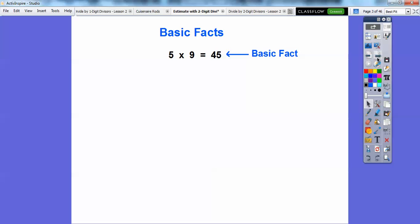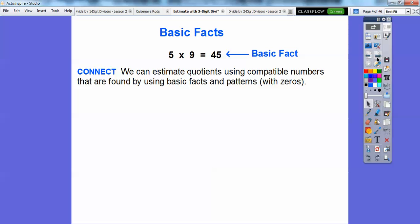So here's some basic facts, you guys. Remember, multiplication is the inverse operation for division. So here's multiplication. 5 times 9 equals 45. So we can estimate quotients using compatible numbers that are found by using basic facts and patterns. Patterns with zeros, for example, if we added a zero, 50 times 9 is 45 with a zero. Do you see how this one zero made this one zero right here?